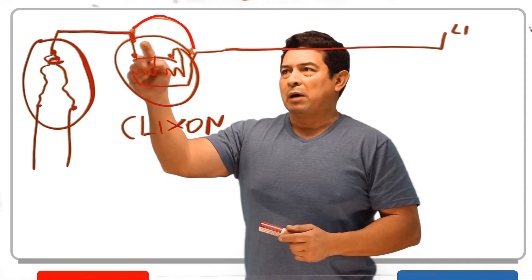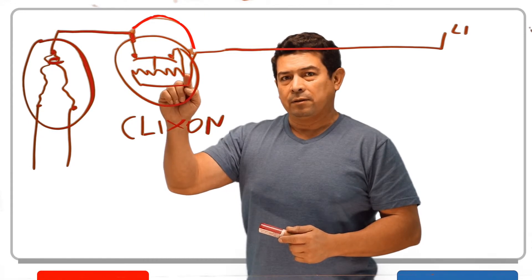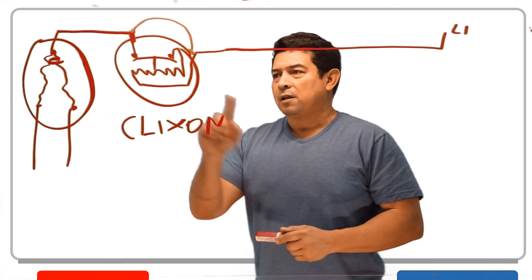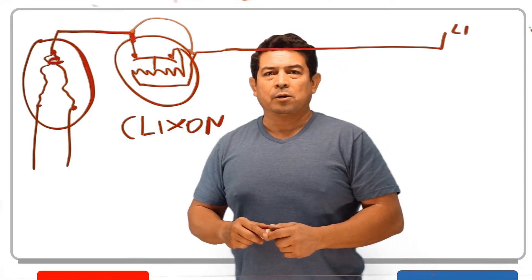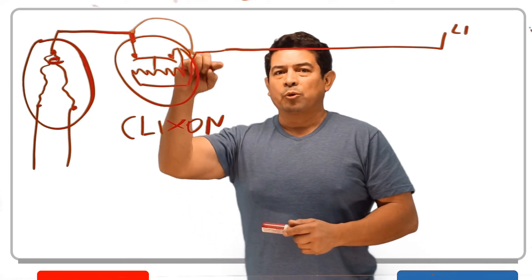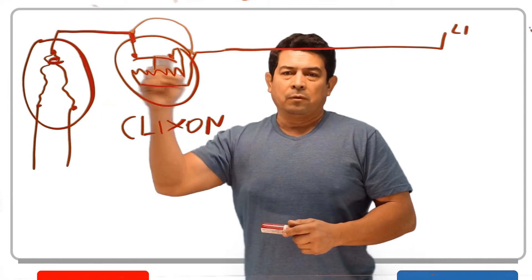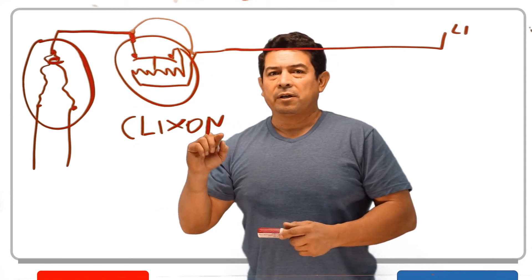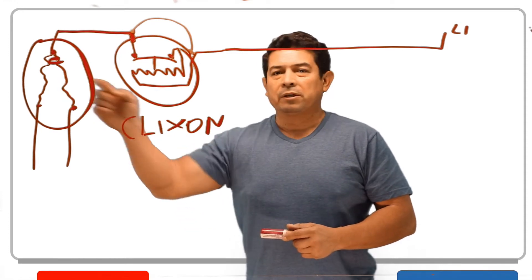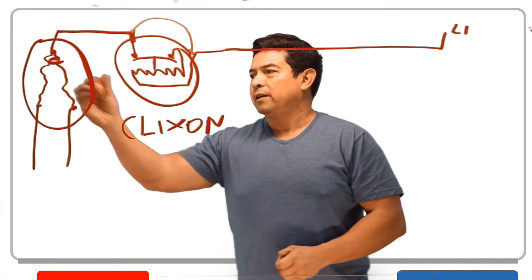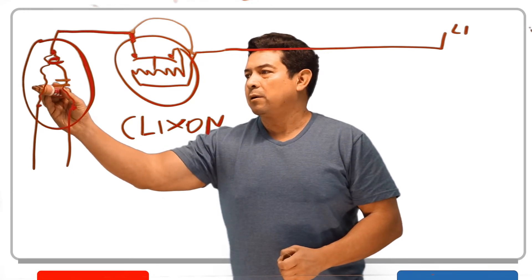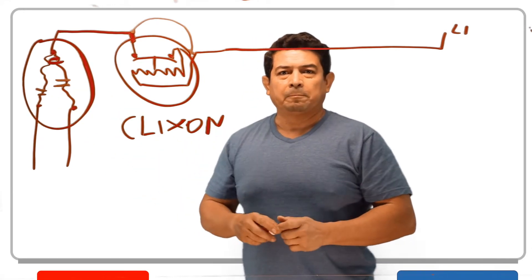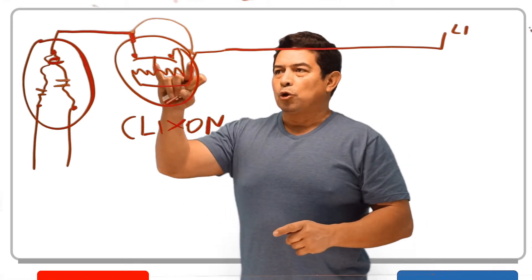Well, to see if by bypassing this, I can make that compressor run. If it runs, then I know that it is the overload that's opened up. So by putting a jumper across here, then that should run. If you put a jumper here and it does not run, then there's a problem internal with this compressor. It could be that you have maybe an open winding here or here, you know, so now your compressor is not going to run.